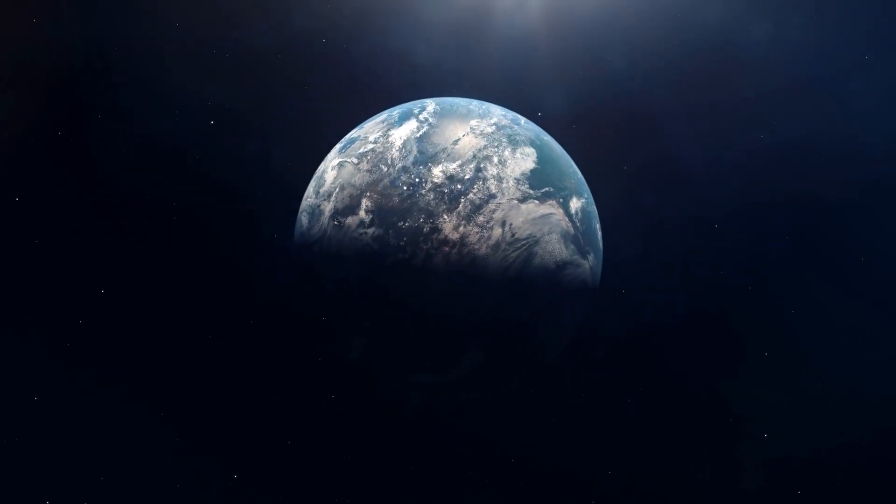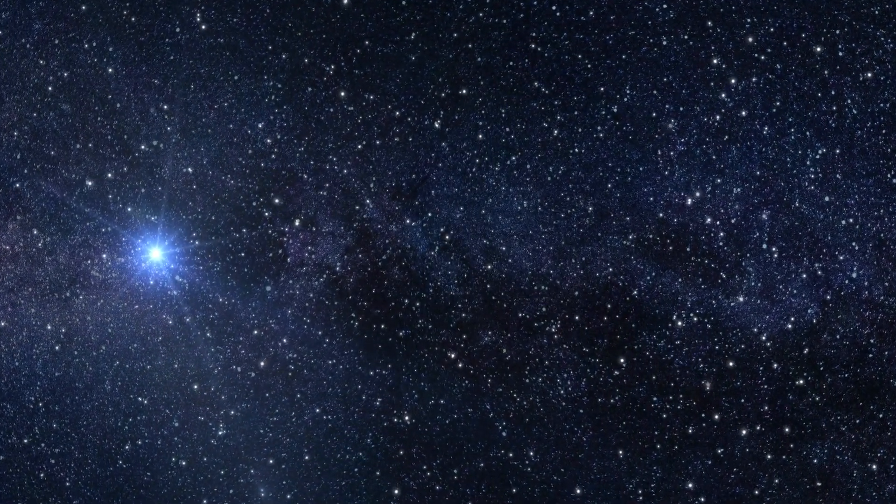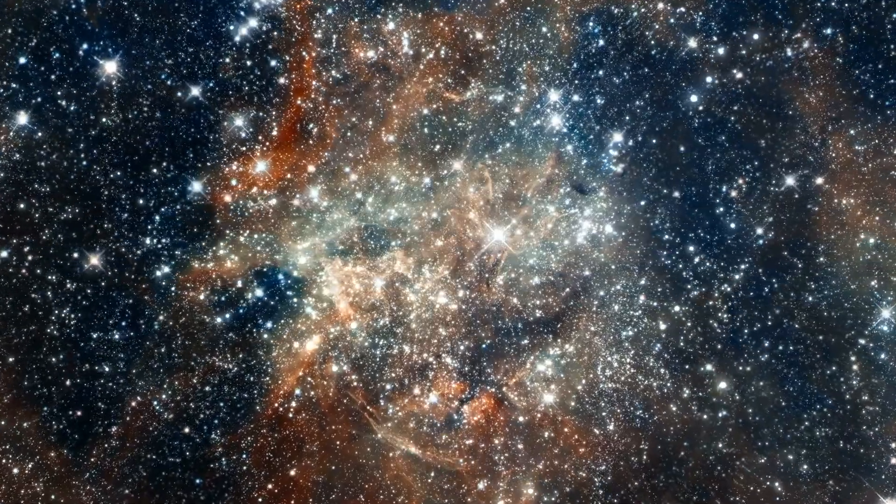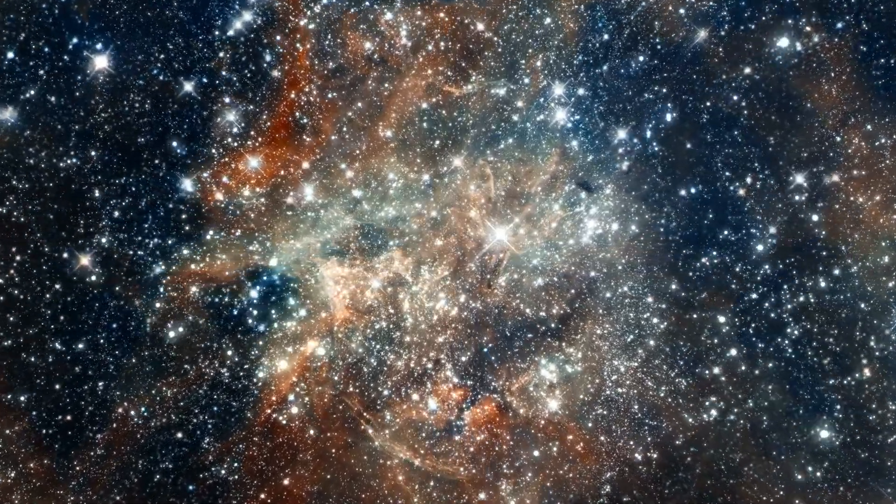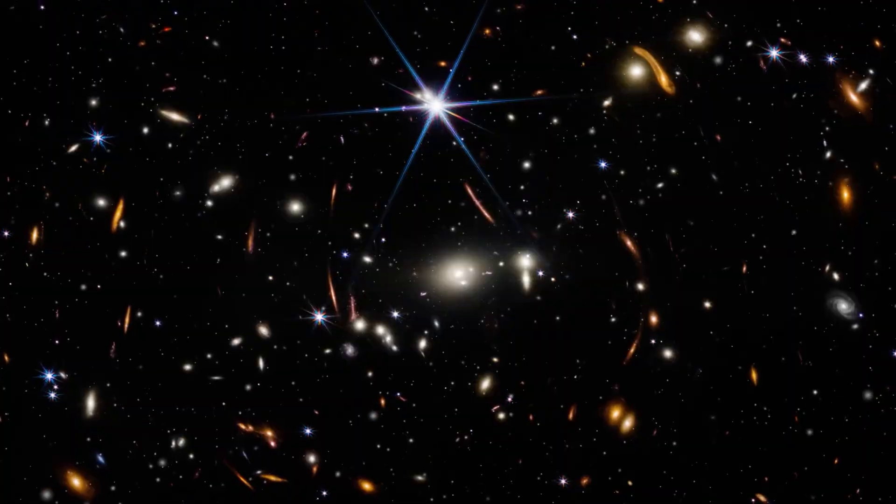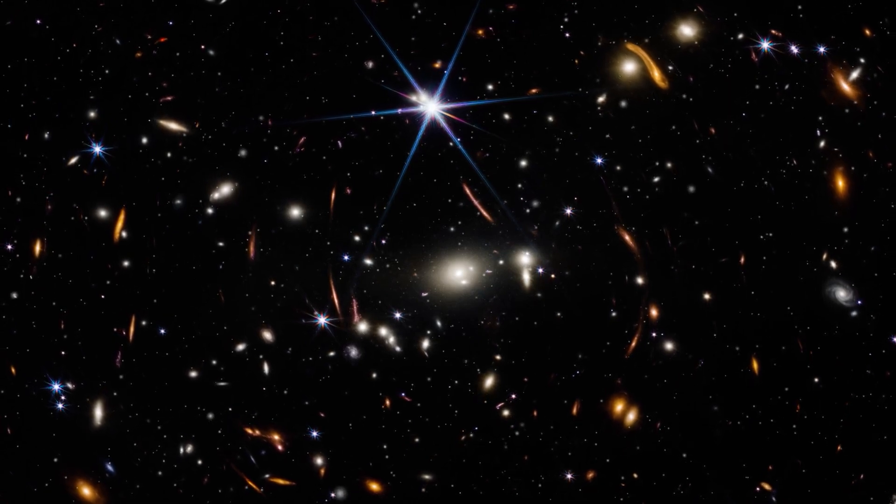In our galaxy alone, there are up to 400 billion stars. And recent research shows that it is likely that almost all of them have planets around them, which puts the estimated number of planets in our galaxy alone at at least 400 billion. But that number is probably much higher.